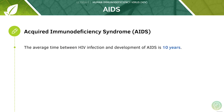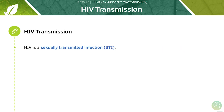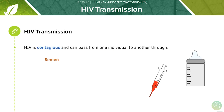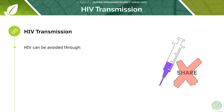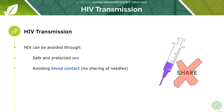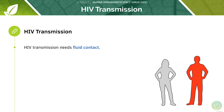The average time between HIV infection and the development of AIDS is 10 years, but this can vary. HIV is a sexually transmitted infection, or STI. It can pass from one individual to another through semen, vaginal fluid, breast milk, and blood. HIV can be avoided through safe and protected sex and avoiding blood contact, since HIV transmission requires fluid contact.